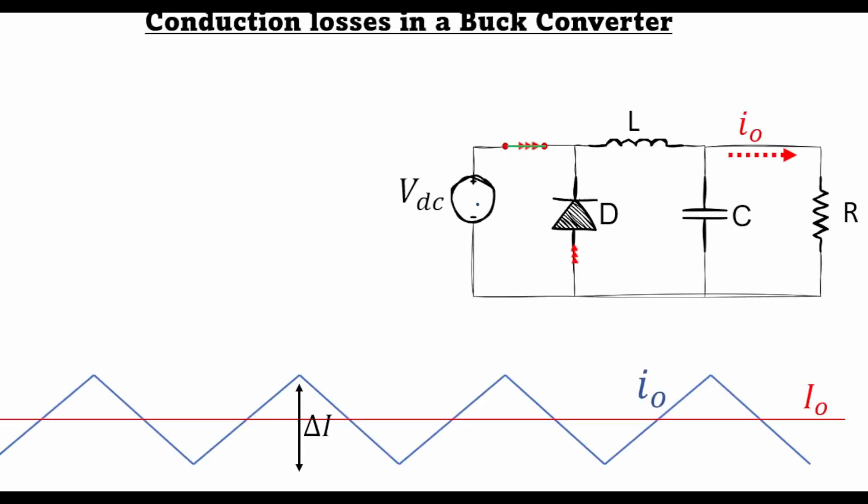From this figure you can see that during the T on stage of the converter, the load current I0 is flowing through the power transistor, while during the T off stage the current flows through the freewheeling diode. Therefore the DC power loss is proportional to the average output current I0.